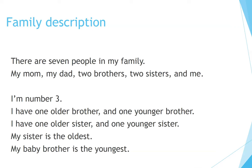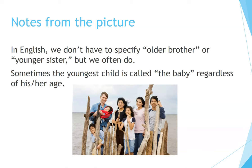I am number three. I have one older brother and one younger brother. I have one older sister and one younger sister. My sister is the oldest. My baby brother is the youngest. In English, we don't have to specify older brother or younger sister, but we often do. Sometimes the youngest child is called the baby, regardless of his or her age.